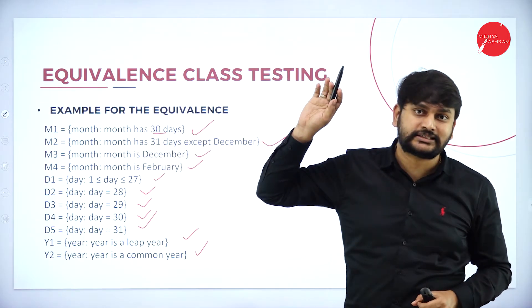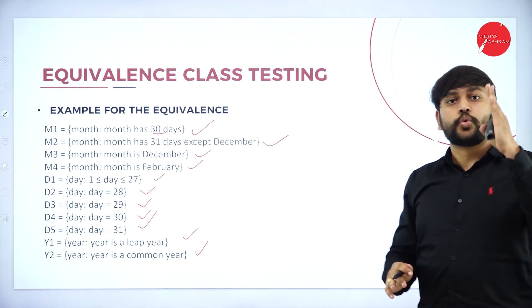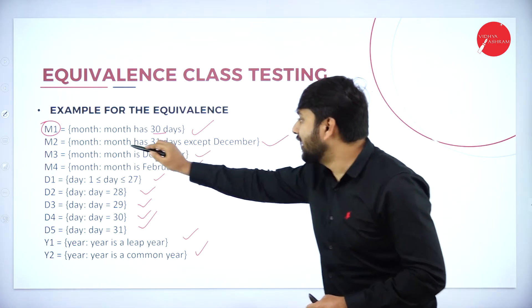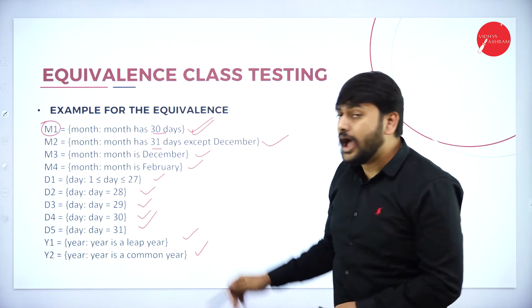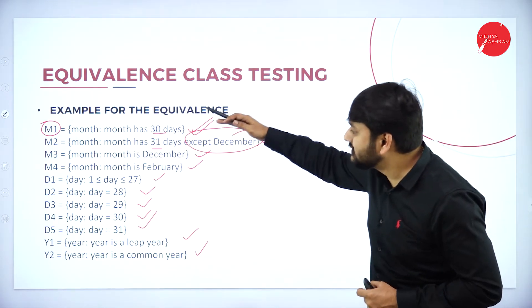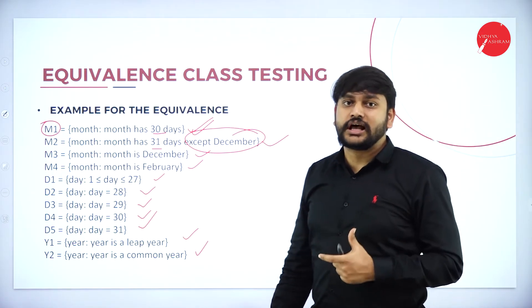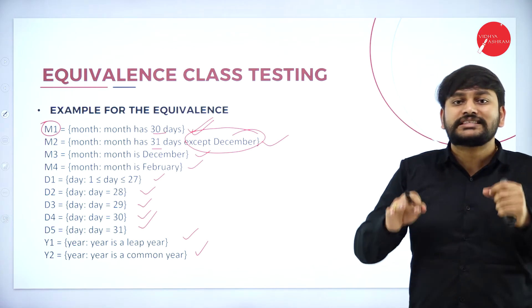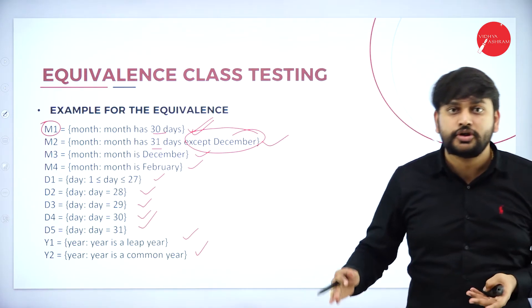For example, m1 covers months which have 30 days, with a range of 1 to 30. M2 covers months which have 31 days, excluding December. Like this, I create different partitions — this is equivalence class testing. Whenever I'm discussing the decision table, I take the help of equivalence class testing to draw the decision table.